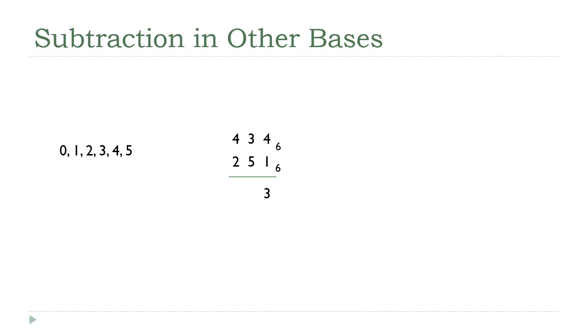You look at the middle column. 3 minus 5. I can't do 3 minus 5, base 6, any more than I can do 3 minus 5 when this is base 10. So I'm going to have to borrow, if you will. So I'm going to look at the next number over. That 4, I'm going to take 1 unit. Be careful with my language here. I'm going to take 1 unit away from 4, reduce it down to a 3.